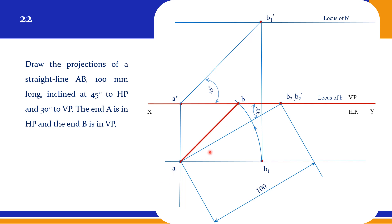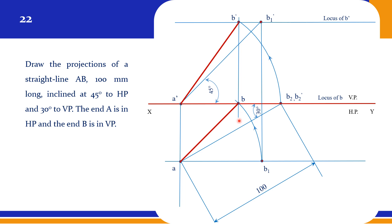This is your top view. Now rotate A dash to B2 dash, with A dash as center, rotate up to the locus of B dash to get B dash. So this is your A dash and B dash. Cross-check your answer — both will be lying on the same projector. A is on HP and B is on VP.